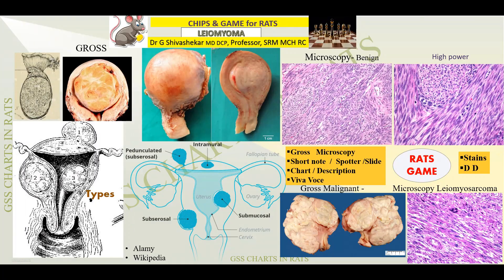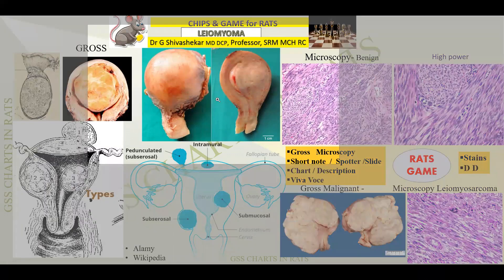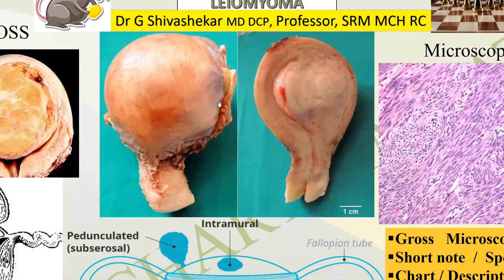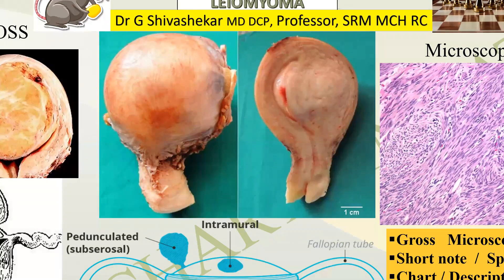Good day students. I shall be continuing with my series on chips and gross pathology microscopy. This particular chart appears extremely simple but it might be difficult to describe it vividly. Let us see how best we can do it. This can be a specimen for us — a mounted specimen. This has been taken from Wikipedia, thanks to it.